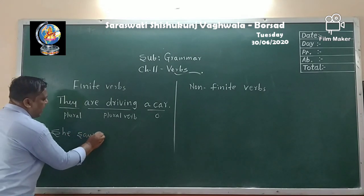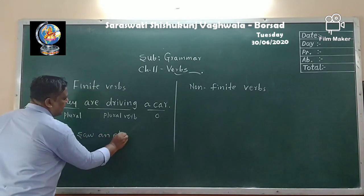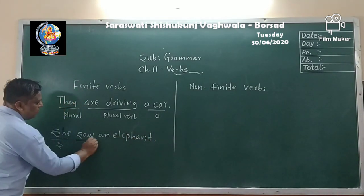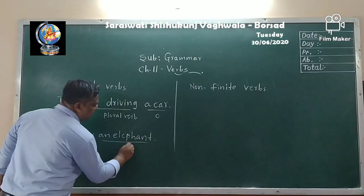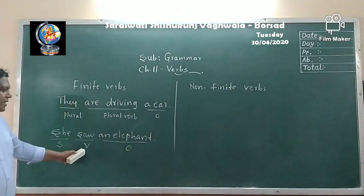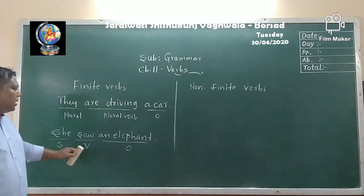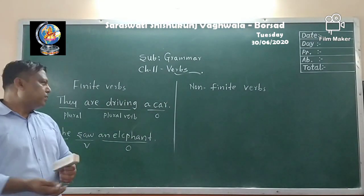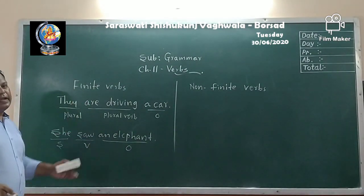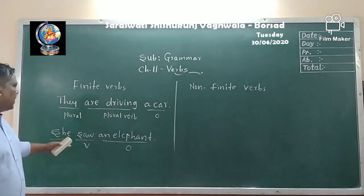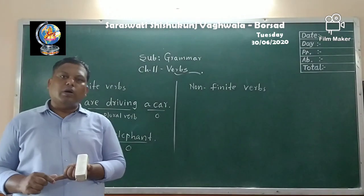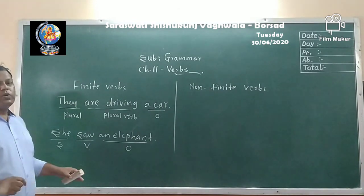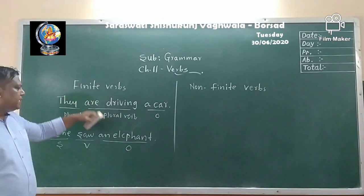Let us take another example: 'She saw an elephant.' Again, we have a subject, a past tense verb form, and an object — simple past tense. The verb is telling something about the action, so it becomes a finite verb. We need to find out whether there is an action and a tense form in the sentence, and it is very simple to understand what a finite verb is.